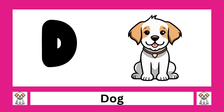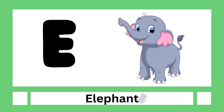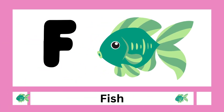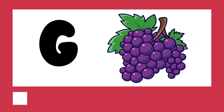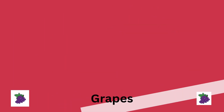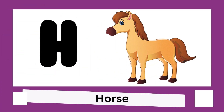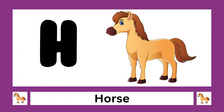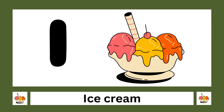D is for dog, E is for elephant, F is for fish, G is for grapes, H is for horse, I is for ice cream.